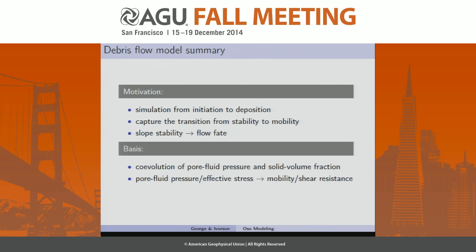Our motivations in developing this model: a somewhat unique motivation is that we wanted to be able to simulate from initiation to deposition — the whole process. We want to capture the transition from a stable mass to a flowing debris flow and see what the fate of a failing mass is. In the two alternative simulations shown earlier, from a slope stability standpoint they're exactly the same — the initial force imbalance leads to a failure. But the difference in those two simulations wouldn't be captured by a slope stability model, so that's what we want to capture with this model: the flow fate.